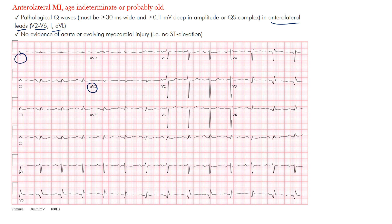The specific leads are V2, V3, V4, V5, V6. Sometimes we refer to the anterolateral leads as V3 through V6, but you often see V2 involved as well, which is why we include it. Leads I and aVL are the lateral limb leads.